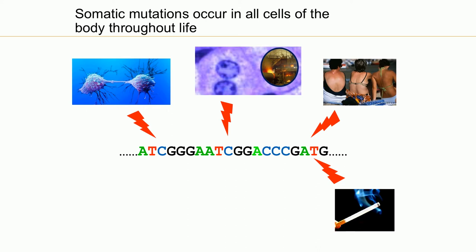Mutations can accumulate due to lifestyle choices — smoking tobacco cigarettes will mutate every single cell of the lung of a smoker, obviously increasing the risk for lung cancer among many other cancer types. Somatic mutations can accumulate unknowingly; for example, ingesting certain substances in food, such as aflatoxin, a type of mold found in things like carrots and peanut butter, which will mutate cells in your bladder and liver. There are many such examples of endogenous and exogenous processes that generate somatic mutations.